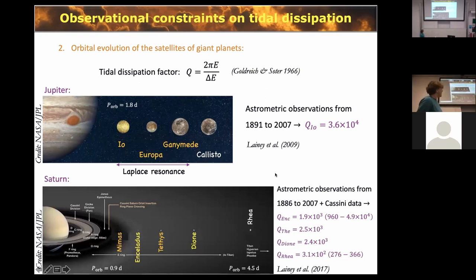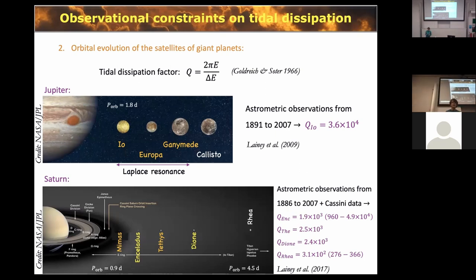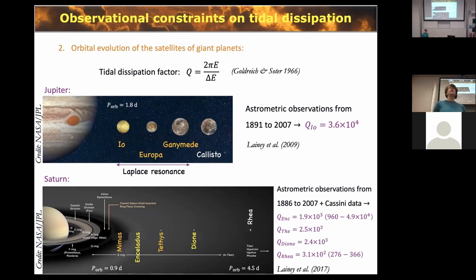For Saturn, we have data from many satellites moving with respect to Saturn, measured by 100 years of observations plus Cassini data. There are resonances complicating the story, but we can still go from the observed motions to calculating the dissipation in Saturn, giving us Q values. Because we have several satellites, we can also see how Q varies with orbital frequency — this is what we work with.